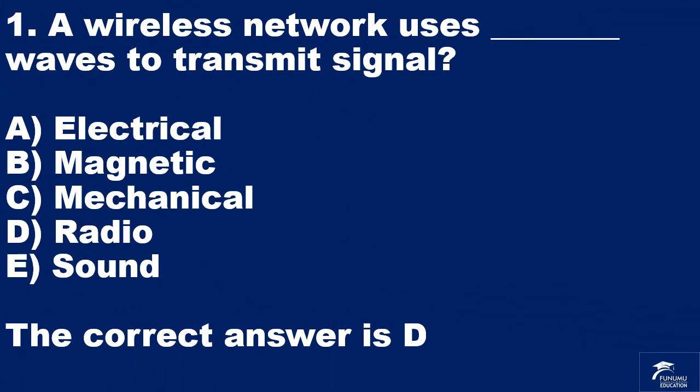Question 1. A wireless network uses blank waves to transmit signal. A: electrical. B: magnetic. C: mechanical. D: radio. E: sound. The correct answer is D.